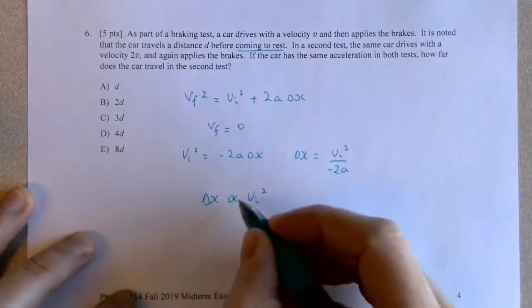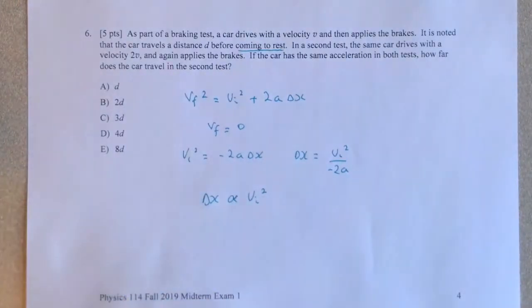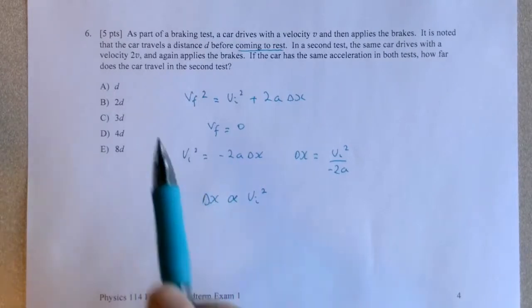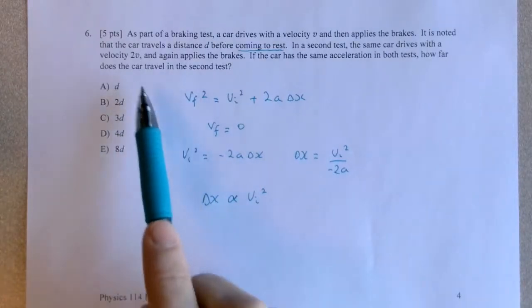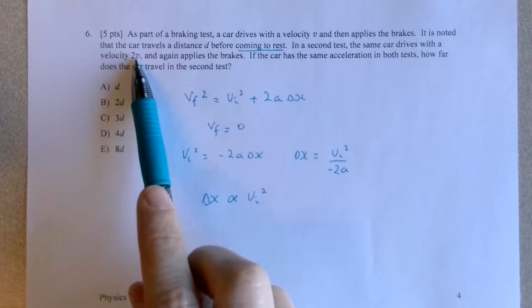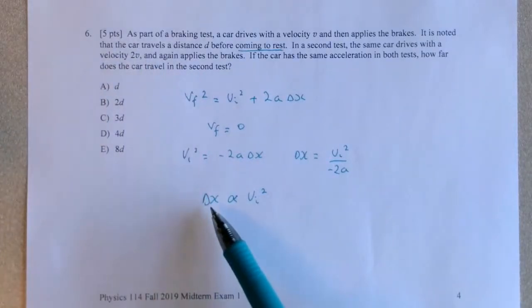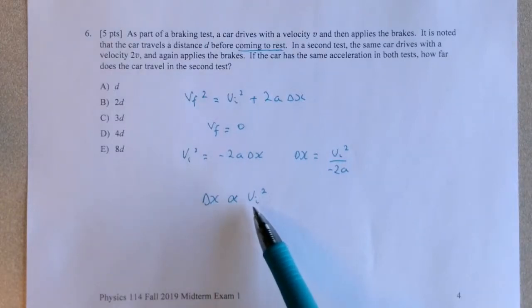So I can state that delta X is proportional to VI squared, which is thinking about scaling. If the second car doubles its initial velocity before it applies the brakes, then the distance delta X traveled will have to quadruple because delta X scales with VI squared.